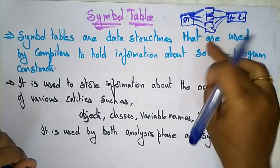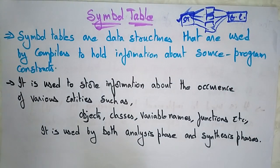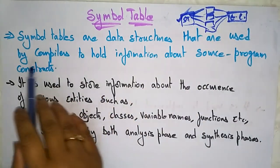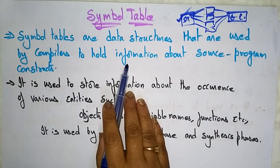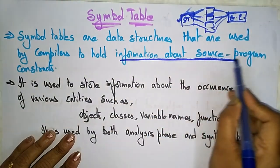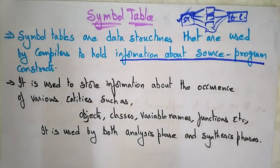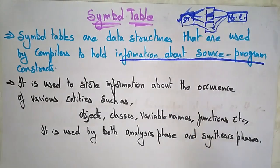All the phases are connected to the symbol table. Now let's see what the symbol table is. Symbol tables are data structures that are used by compilers to hold information about the source program constructs. The symbol table holds information about the source program. When the compiler converts the source program into the target program, it needs information about the source program, and that information is stored in the symbol table.